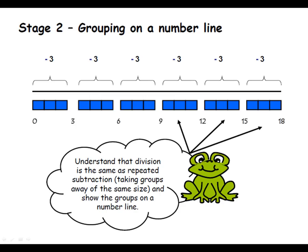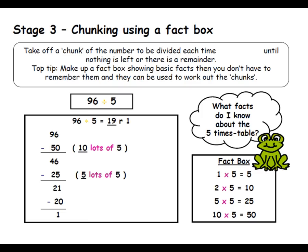The interim method before we move on to the more standard method for division we tend to call chunking, which is based on the concept of division being repeated subtraction. We might start off with a number like 96 or maybe 196 divided by five, and start to take away five repeatedly. We talk about what's the problem with that method, and hopefully the children come up with the idea that you're going to end up with a very long calculation that takes a very long time. That moves on to the concept of chunking away in larger multiples of the numbers.